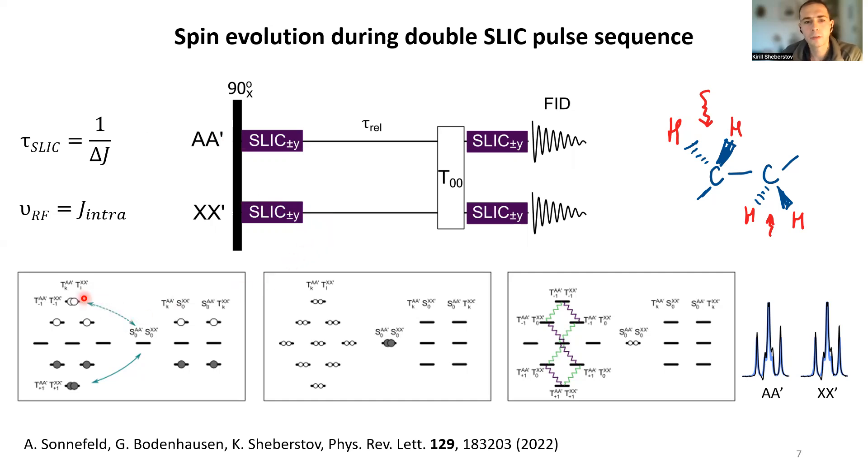However, it allows you to convert essentially twice more magnetization into this long-lived imbalance, and upon reconversion you observe twice higher signals on both spins.